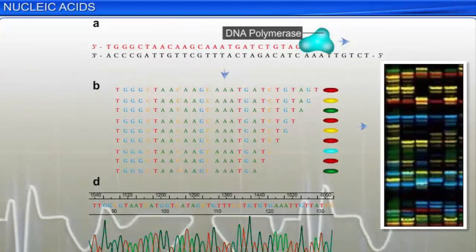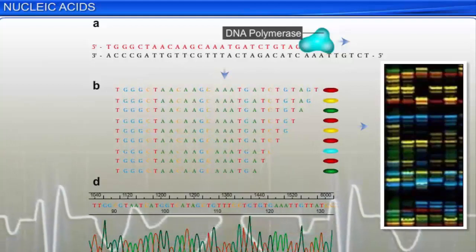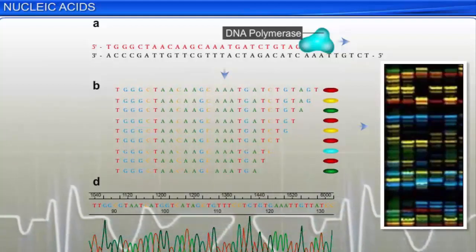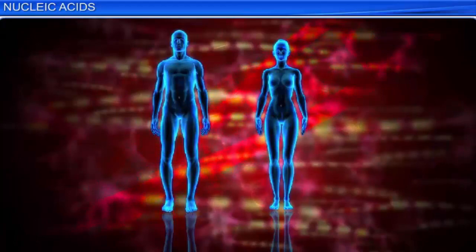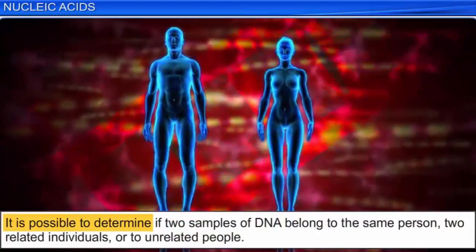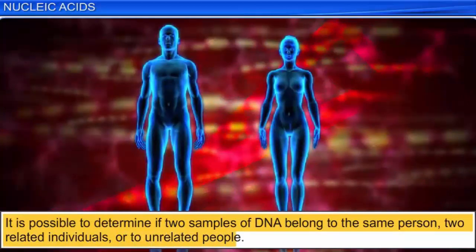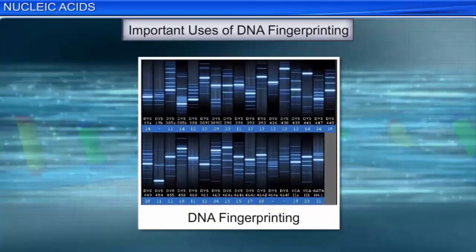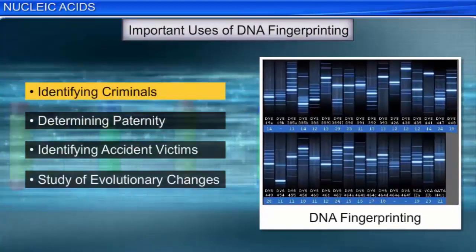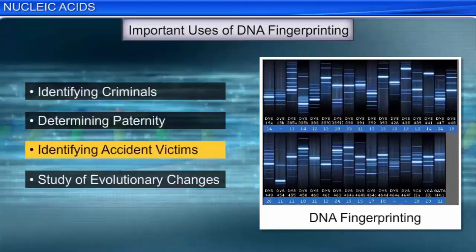Nucleic acids are vital for protein synthesis. DNA stores the code for the amino acid sequence, while RNA molecules link the amino acids together. Each individual has a unique DNA sequence. Information regarding the sequence of bases on DNA is called DNA fingerprinting. Through DNA fingerprinting, it is possible to determine if two samples of DNA belong to the same person, to related individuals, or to unrelated people. DNA fingerprinting has important uses in identifying criminals, determining paternity, identifying accident victims, and in the study of evolutionary changes.